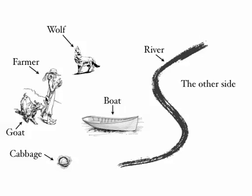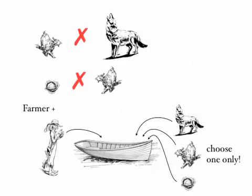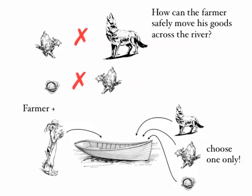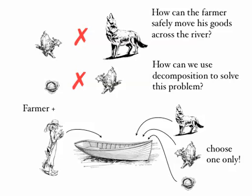Let's remind ourselves quickly about the boat problem. We've got a wolf, farmer, goat, cabbage and a river, and they need to use the boat to get across to the other side. However, there's only room in the boat for the farmer and one of the other articles. We can't leave the wolf and the goat together because the wolf eats the goat, and we can't leave the goat with the cabbage because the goat would eat the cabbage. So how can the farmer safely move his goods across the river? We'd like to use decomposition to help us solve this problem.